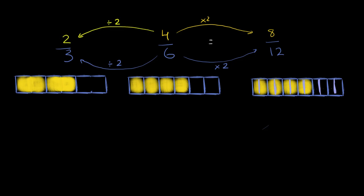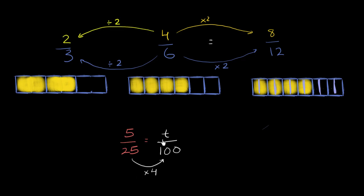So with that in mind, let's tackle an equivalent fractions problem. Let's think about if someone says: I have 5 over 25, and I want to write that as some value t over 100. What would t be? Well, we can see in the denominator — to go from 25 to 100, you had to multiply by 4. So if you want an equivalent fraction, you have to multiply the numerator by 4 as well. So t will need to be equal to 20. 5 over 25 is the same thing as 20 over 100.